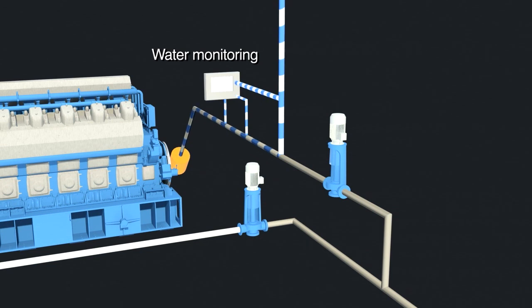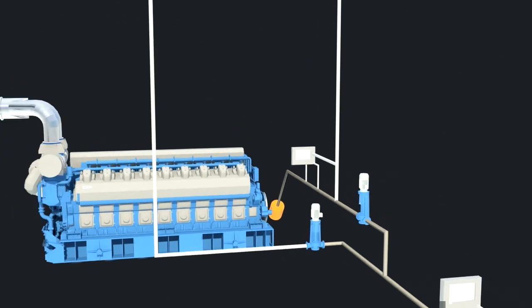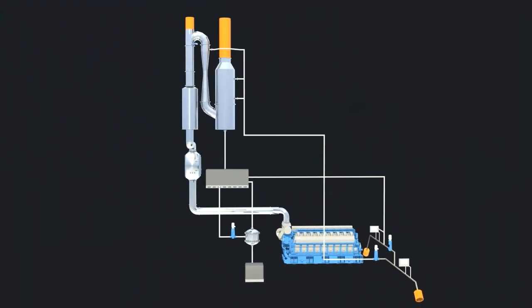Monitoring at inlet and outlet is done in order to show compliance with regulations. The different streams and circulations within the exhaust gas cleaning system are indicated with different colors.